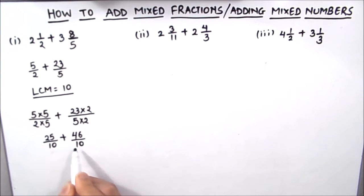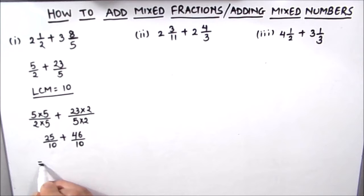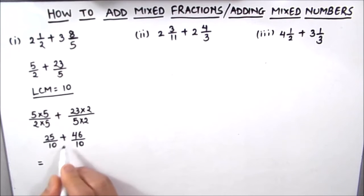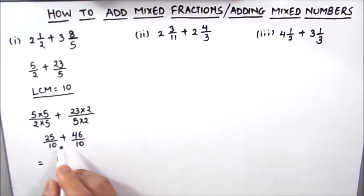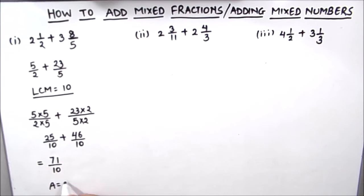Now both the denominators are equal, so we can add the two fractions directly by adding their numerators. So this will be 25 plus 46. 5 plus 6 is 11, 1 is carried over, 4 plus 2 is 6 plus 1 is 7 — so this is 71/10. Our final answer will be 71/10.